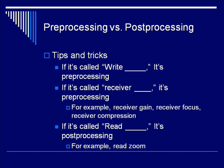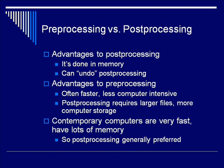For example, most machines have a read zoom option, which is post-processing. Why do something in pre-processing versus post-processing? Some things must be done in pre-processing before we have an image, and some things require an image and must be done in post-processing. But many things can be done either way. One advantage of post-processing is that it's done in memory, so we can undo it if needed. One advantage of pre-processing is that it's generally faster and less computer-intensive, since post-processing requires larger file sizes and more computer storage.